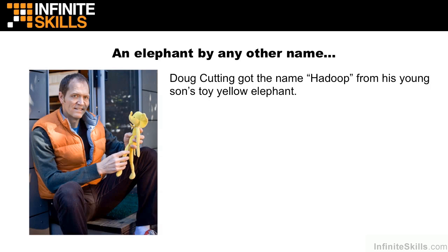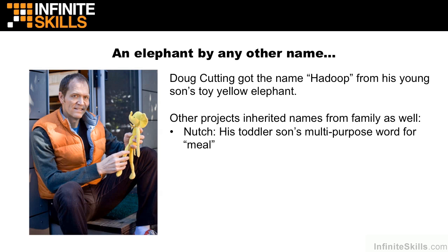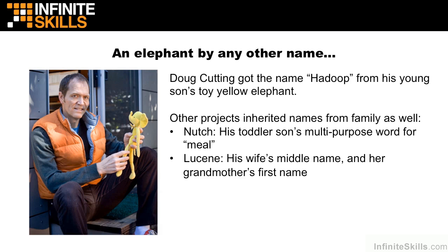Hadoop is a rather strange name for a piece of software, and Doug actually got the name from his young son's toy elephant. In the beginning of Tom White's Hadoop: The Definitive Guide, there's a great chapter where Doug goes into detail about why kids are so great at coming up with unique names. Doug has been a very busy individual — Hadoop is far from the only thing he does. Nutch, the open-source web crawler, was also a Doug Cutting project; Nutch was his son's multi-purpose word for meal. Another of his projects, Lucene, actually came from his wife's middle name and her grandmother's first name. When you're looking for names for your own projects, you may want to talk to your toddler or do some investigation of your wife's names.